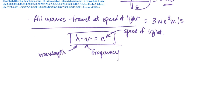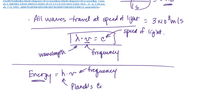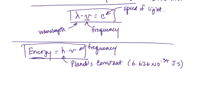I can also relate the energy of the electromagnetic radiation to the frequency of the wave. The higher the frequency of the wave, the more energetic the energy is. That's given by the following equation: the energy of the wave is the frequency multiplied by Planck's constant. Planck's constant is 6.626 times 10 to the negative 34th joules times seconds. It's also possible to develop an expression for energy as a function of wavelength as well.